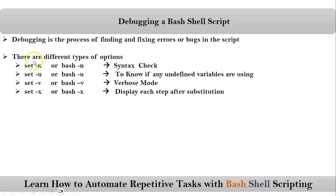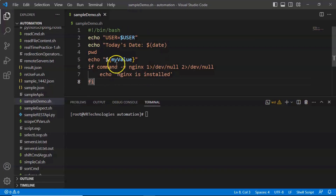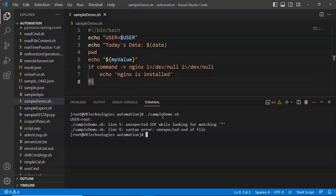These options you can define inside the shell script itself. You can also use them from the command line, or include them in your shebang line. Let me show you with a simple example. This is my simple shell script. If I directly run it, observe the output — you are getting some errors.